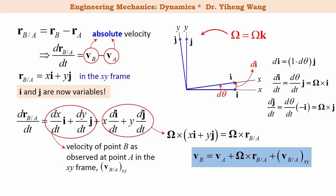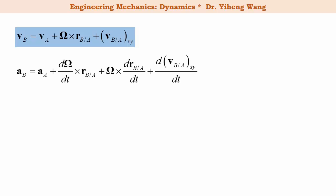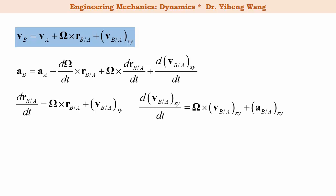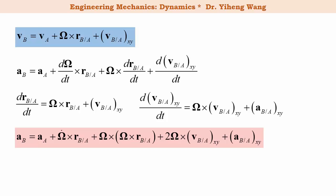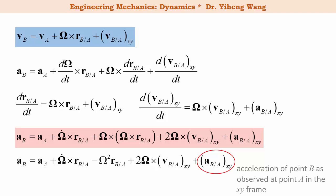I will explain the meaning of each term in an example shortly. Similarly, from the velocity equation we can take the time derivative of the entire equation to get the equation that relates the absolute accelerations of points A and B. Applying chain rule again and using the same approach as before, we arrive at the acceleration equation. Omega-dot is the angular acceleration of the rotating reference frame, and one term is the relative acceleration of point B as measured from point A attached to the rotating reference frame.